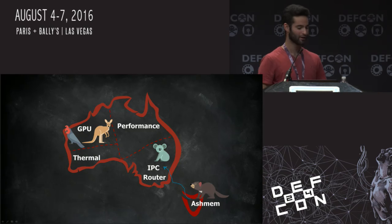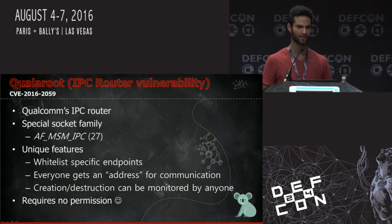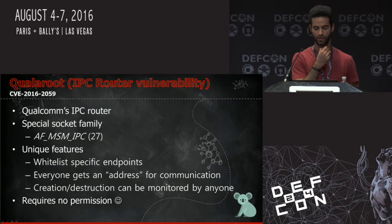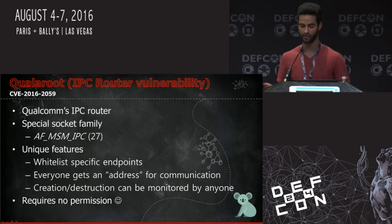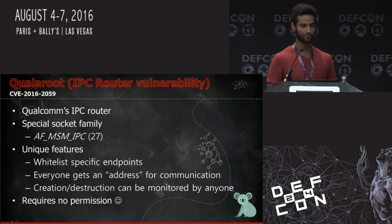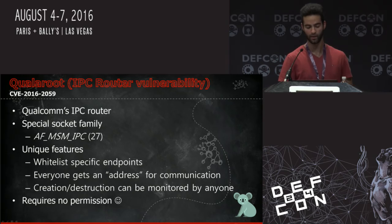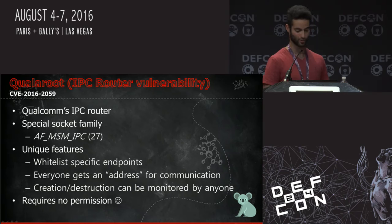Moving to the second vulnerability: QualaRoot. QualaRoot is a vulnerability in the IPC mechanism of Qualcomm — basically a new address family in the system called AF_MSM_IPC. It has some unique features: you can whitelist or blacklist other sockets and filter them by group ID, preventing unprivileged processes from communicating with you. Another cool feature: anyone can monitor the entire system, getting notifications for any creation or destruction of a socket with this address family — and no permissions are required.